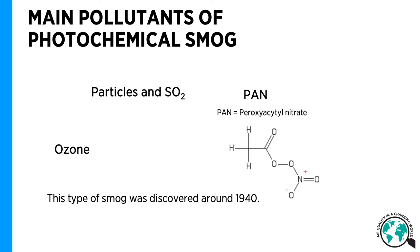Ozone is also phytotoxic, which means that it can damage plants. PAN is a powerful lacrimator, which means it causes the shedding of tears, like a tear gas. PAN can also cause respiratory damages at high levels, and like ozone, it is very phytotoxic.